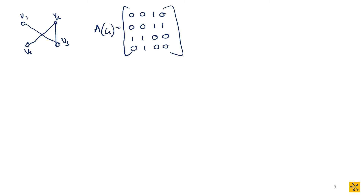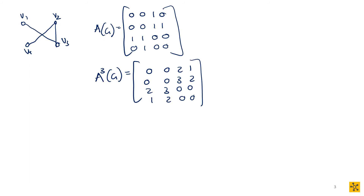We're going to continue the example and look at the adjacency matrix E to the power of three to find walks of length three. Let's redraw our example graph and adjacency matrix. Taking matrix E to the power of three — again, you don't have to know how to do this yet — gives us: [0, 0, 2, 1 / 0, 0, 3, 2 / 2, 3, 0, 0 / 1, 2, 0, 0]. Each element indicates the number of walks of length three from v_i to v_j.